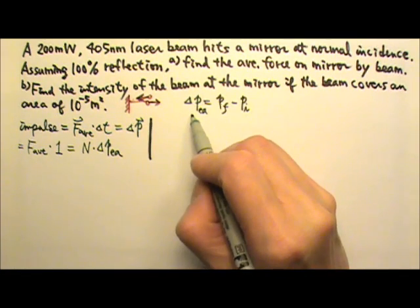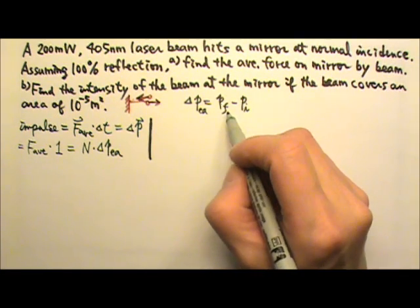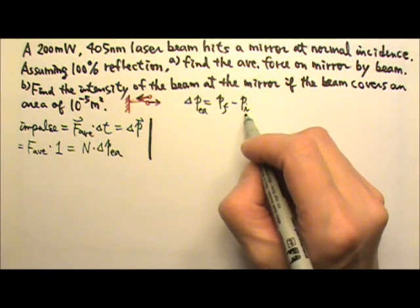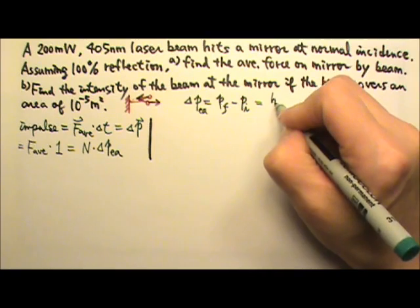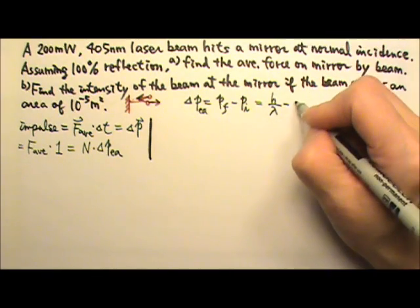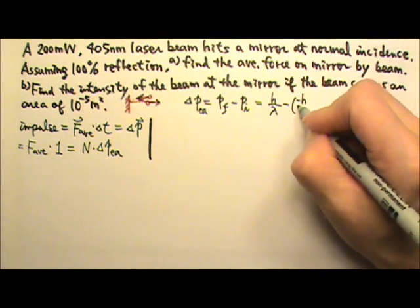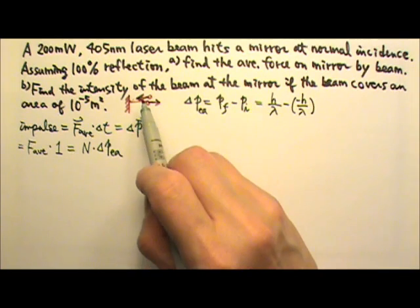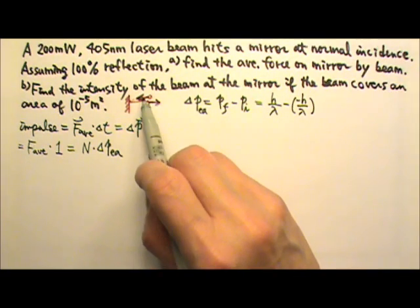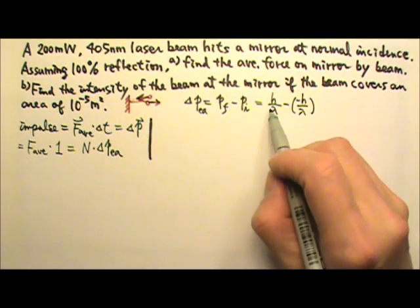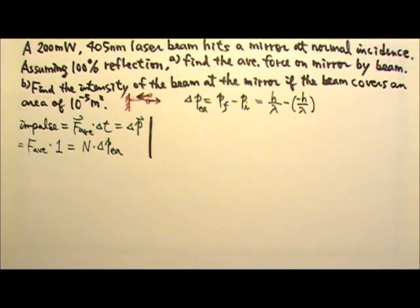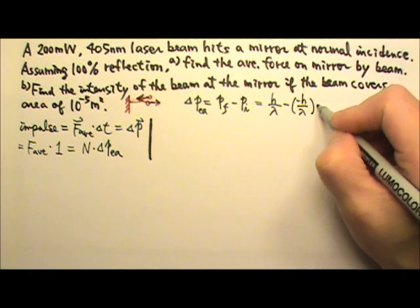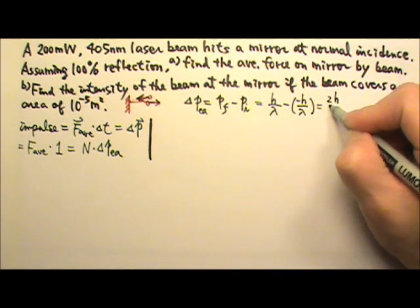The changing momentum for each photon is the final momentum minus the initial momentum. The final momentum is h over lambda. The initial momentum would be negative h over lambda, because the initial and final are in opposite directions. So if I make one positive, I have to make the other one negative.